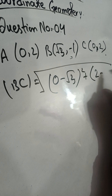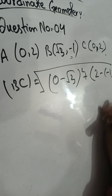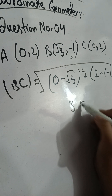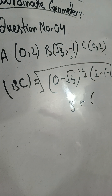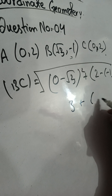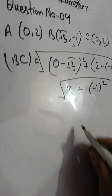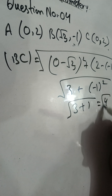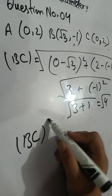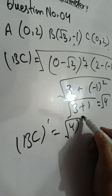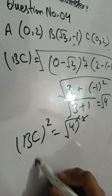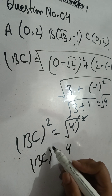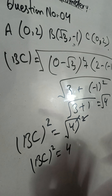For BC: zero minus root 3, plus two minus negative one — that gives root 3 squared plus 3 squared equals 3 plus 1 equals 4. So BC equals root 4, which is 2. Now for AC: zero minus zero squared plus two minus negative two squared gives zero plus 16, so AC equals root 16 equals 4.